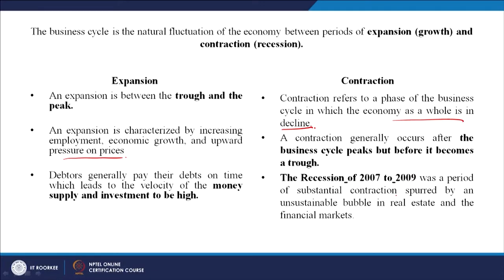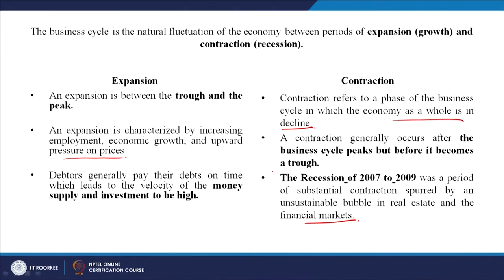The recession of 2007–09 was a period of substantial contraction spurred by an unsustainable bubble in real estate and financial markets. During contraction, many companies reduce production because of a slowdown, inventories lie idle, and spending on advertising falls. There is a fall in jobs as production stops, and national spending by people falls. This relates to the multiplier effect and employment multiplier strategies the government uses during depression or recession.